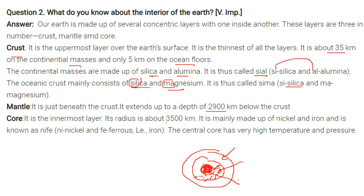Its radius is about 3500 kilometers. It is mainly made up of nickel and iron and is known as nife, nickel and ferrous. Ferrous is for iron, so nife. The central core has high temperature and pressure.